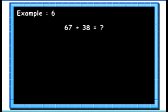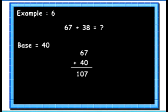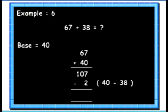Let's see another example. Here we will add 67 and 38. We will take the base as 40. 67 plus 40 gives us 107. Then we will subtract 40's complement of 38 from this 107. 40's complement of 38 is 40 minus 38, that is 2. 107 minus 2 gives us the answer as 105.